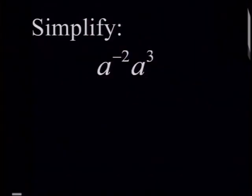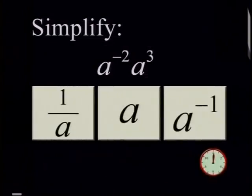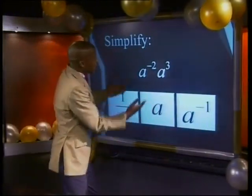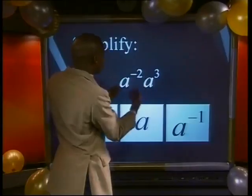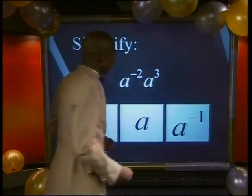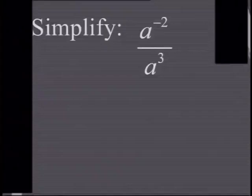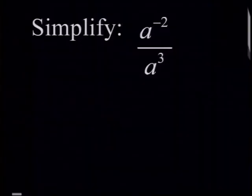How about this one: a to the power of negative 2 multiplied by a to the power of 3. Can you tell me which one is correct? If you know your exponential laws — when we multiply powers of the same base we just add the exponents — then the answer will be a to the power of 1, which is simply a.